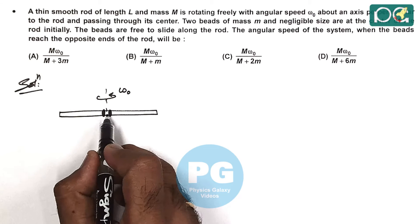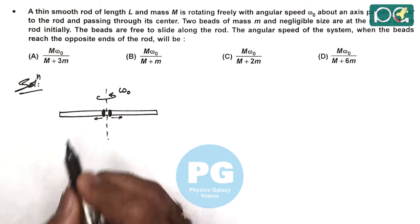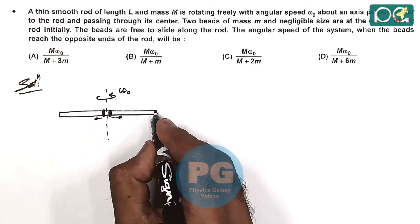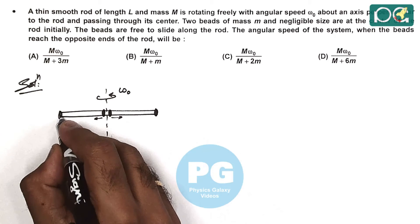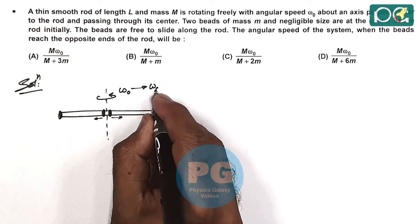And due to slight disturbance and in the frame of rod due to centrifugal forces these will start sliding out. We are required to find the final angular speed when these beads reach the opposite ends of the rod and say if omega naught changes to omega final.